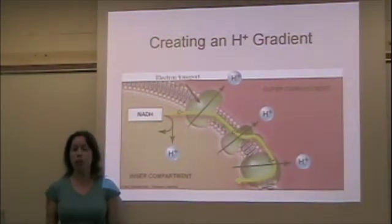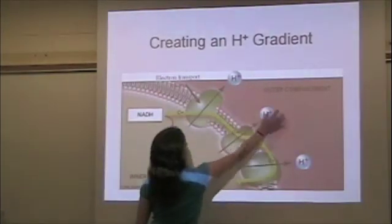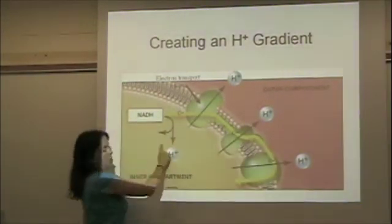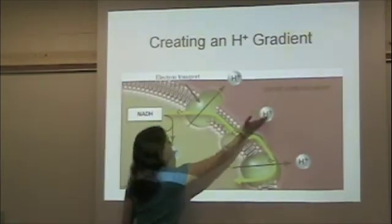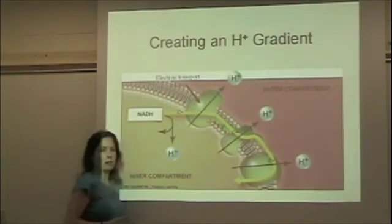This sets up a hydrogen ion gradient. There are lots of hydrogens outside and hardly any inside because they're all pumped against the concentration gradient outside the cell.